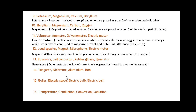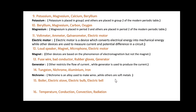Next: Tungsten, Nichrome, Aluminium and Iron. Among these, Nichrome is the odd one out. Since Nichrome is an alloy used to make wires, while others — Tungsten, Aluminium and Iron — are pure metals.